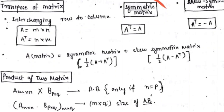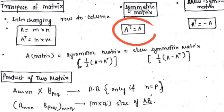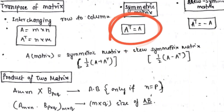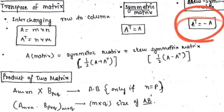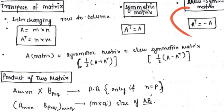A symmetric matrix is one where the transpose of the matrix is equal to the original matrix — that is, A transpose equals A. A skew symmetric matrix is one where the transpose equals the negative of the original matrix — that is, A transpose equals minus A.